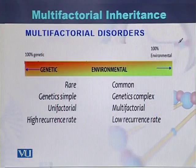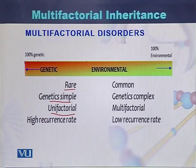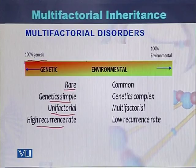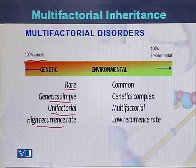In this diagram we can see what is the difference between genetic diseases and multifactorial diseases. Those diseases which are rare have simple genetics — they are unifactorial and they have a high recurrence rate. These diseases are one hundred percent genetic, one hundred percent hereditary. On the other hand, multifactorial diseases involve more than two genes or an interaction between genes and the environment.